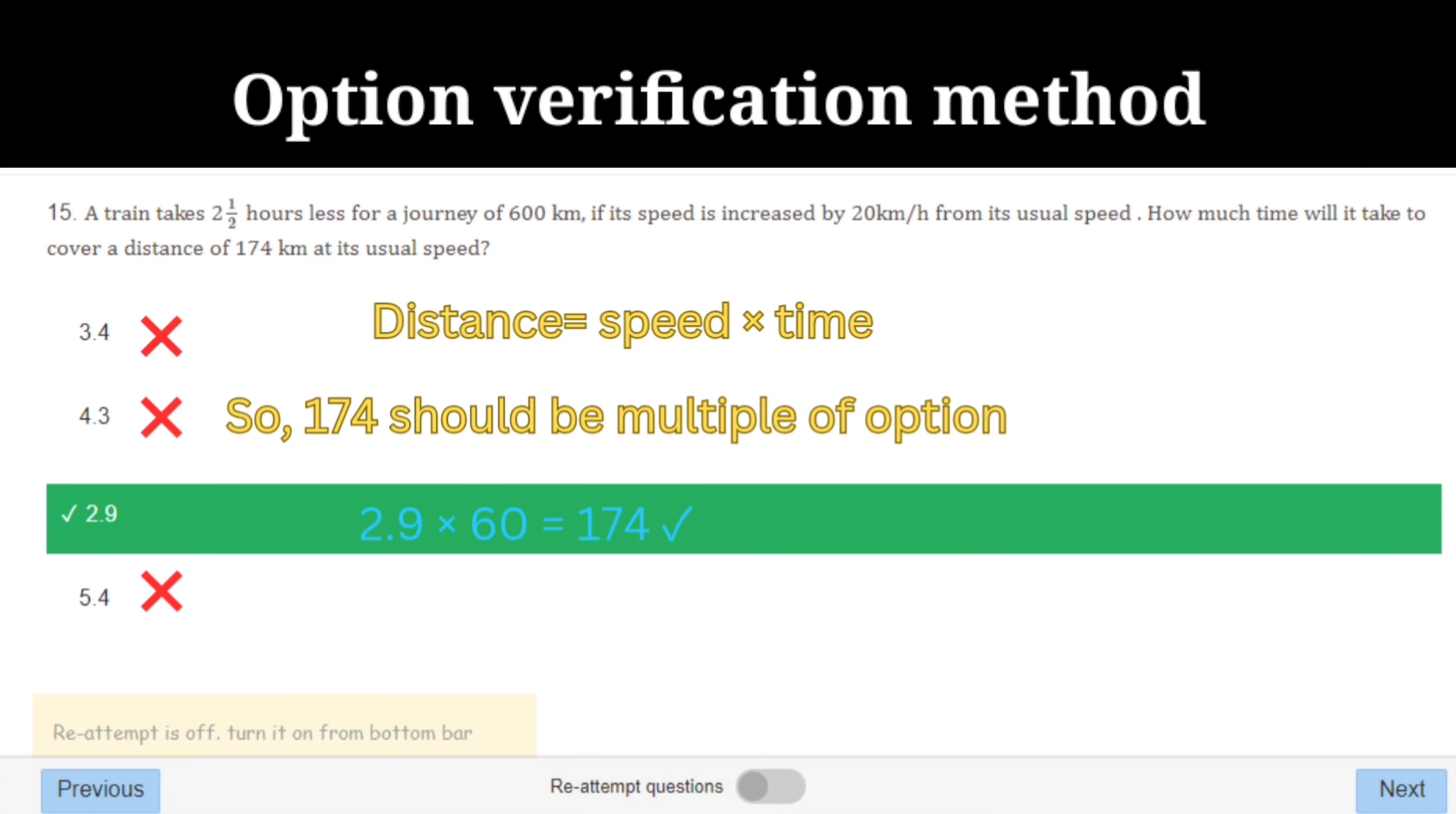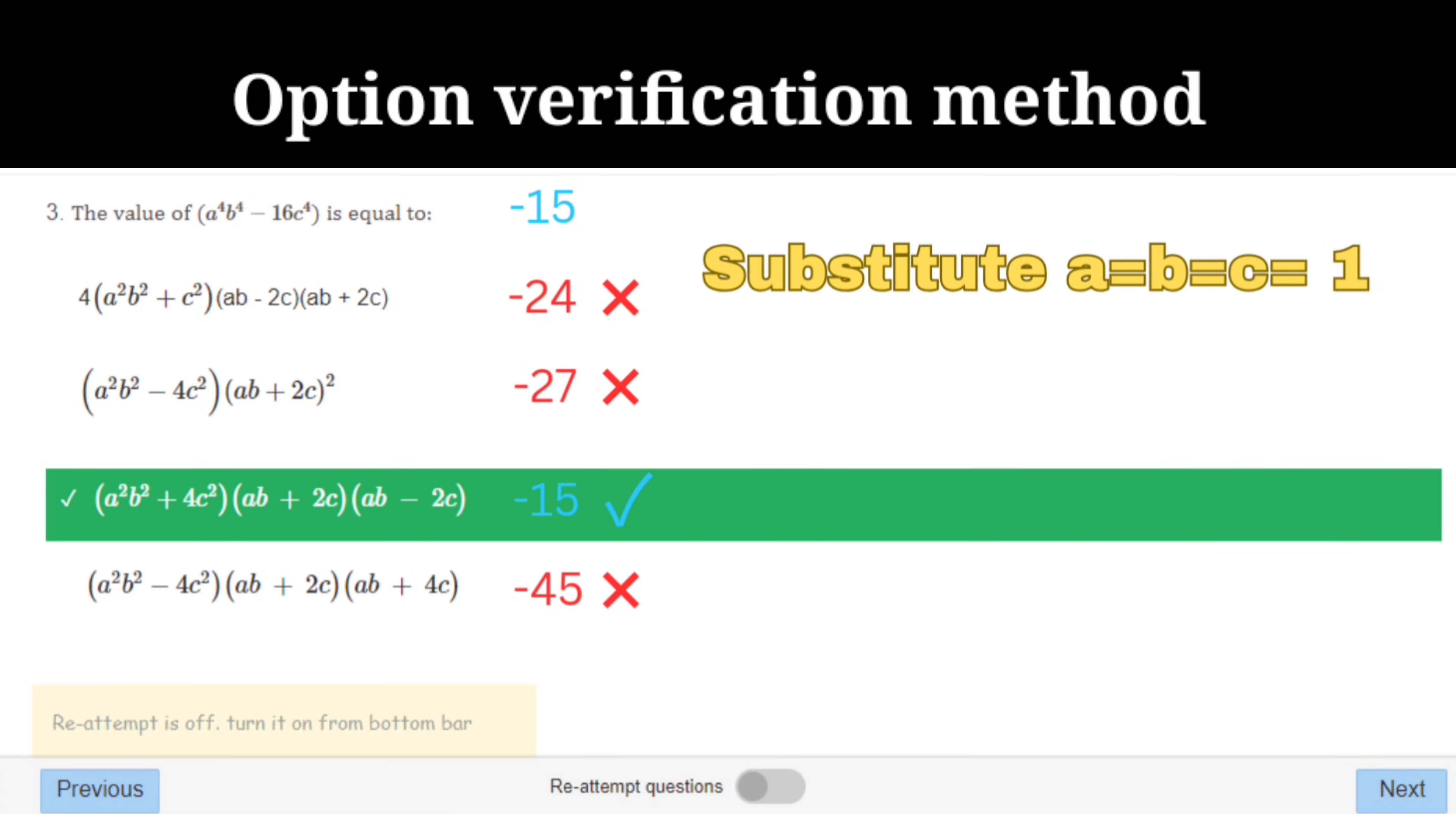We know that distance equals speed into time, so here 174 should be a multiple of the options. 29 into 6 is 174, which means you can directly mark the option as 2.9. Moving on to the next question.